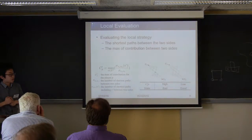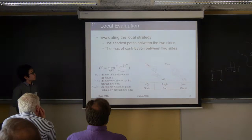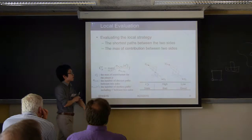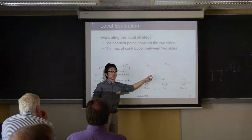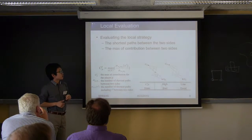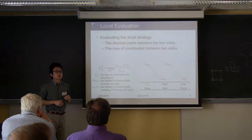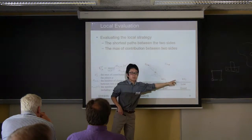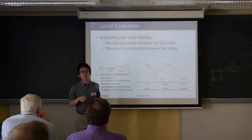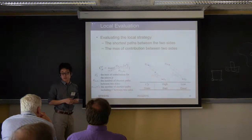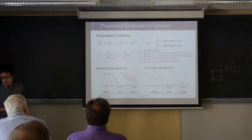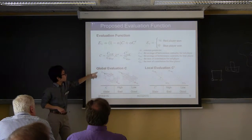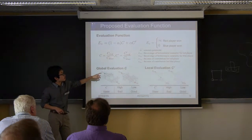For local strategy, we use the max of contribution between two sides. In the shortest path network, if there is a node related to all paths, it is a bad state, because all paths are lost if the opponent plays their pieces on this node. But a low value of the max contribution is good — there is a variety of paths between the two sides. Our proposed evaluation function has C as global evaluation and C' as local evaluation.